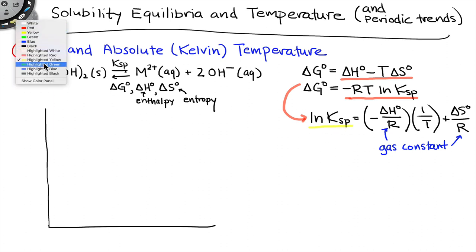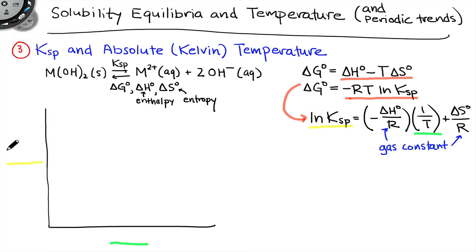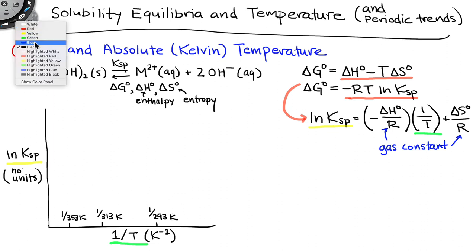Notice that ln(KSP) should be related in a linear way to 1/T. We can think of ln(KSP) as the y variable and 1/T as the x variable, with slope equal to −delta H°/R and y-intercept equal to delta S°/R. So if we plot ln(KSP) on the y-axis and inverse temperature on the x-axis, we should expect a linear fit. In the lab, we're going to make measurements at approximately 80°C (1/353 K), approximately 40°C (1/313 K), and approximately 20°C (1/293 K).